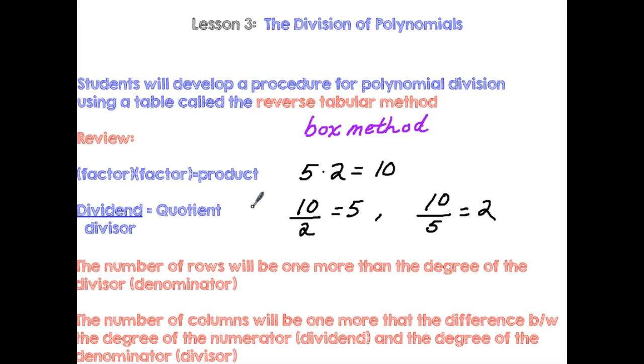Now when we talk division, ten here is called the dividend, two is the divisor, and five is the quotient. Same thing over here. Ten divided by five, ten is the dividend, five is called the divisor, and two is the quotient. What you're going to focus on today is finding the quotient. That's what we're going to be finding today, but we're going to be doing it with polynomials, not from whole numbers.